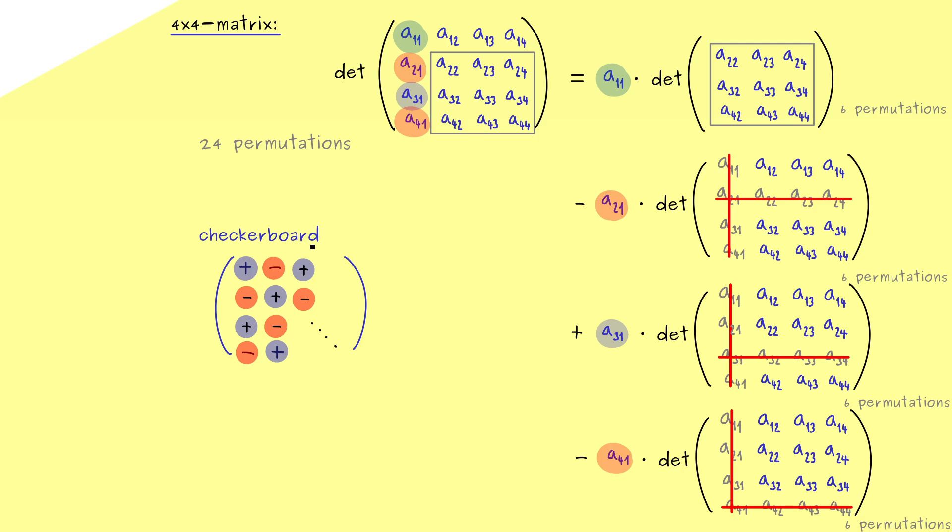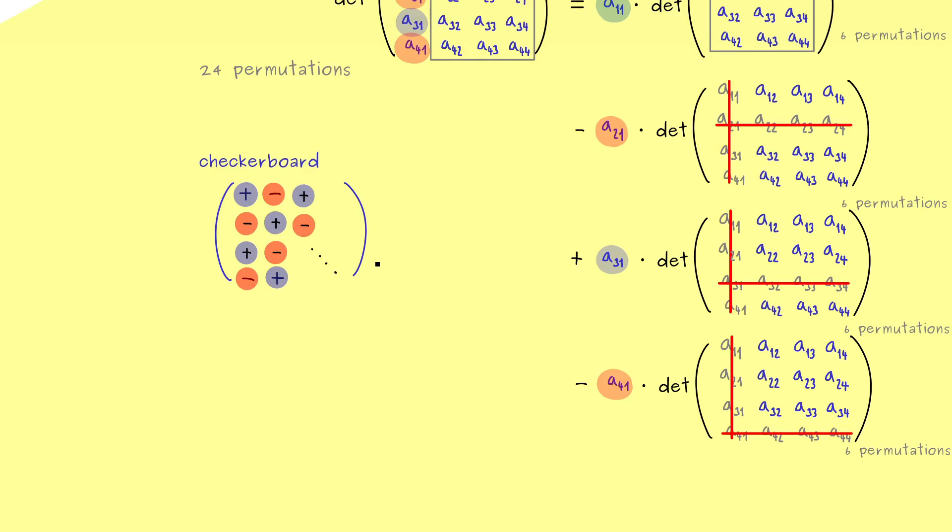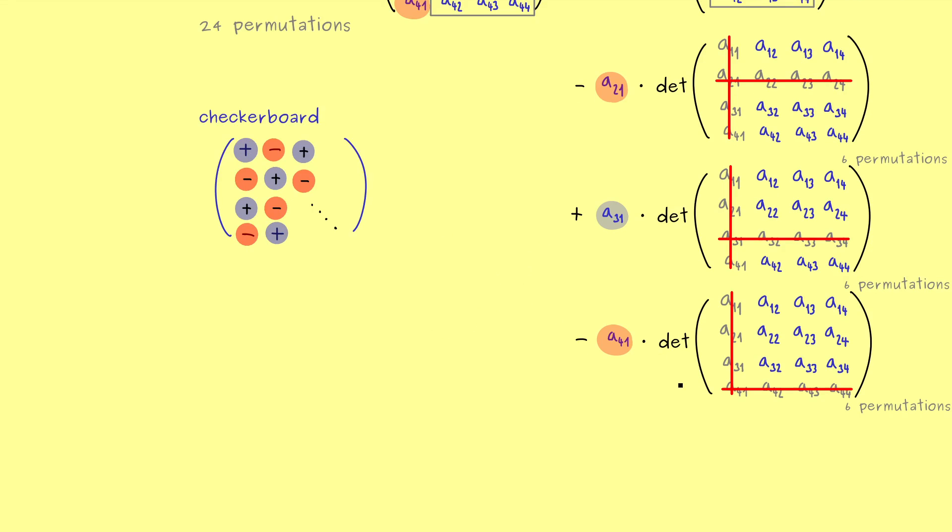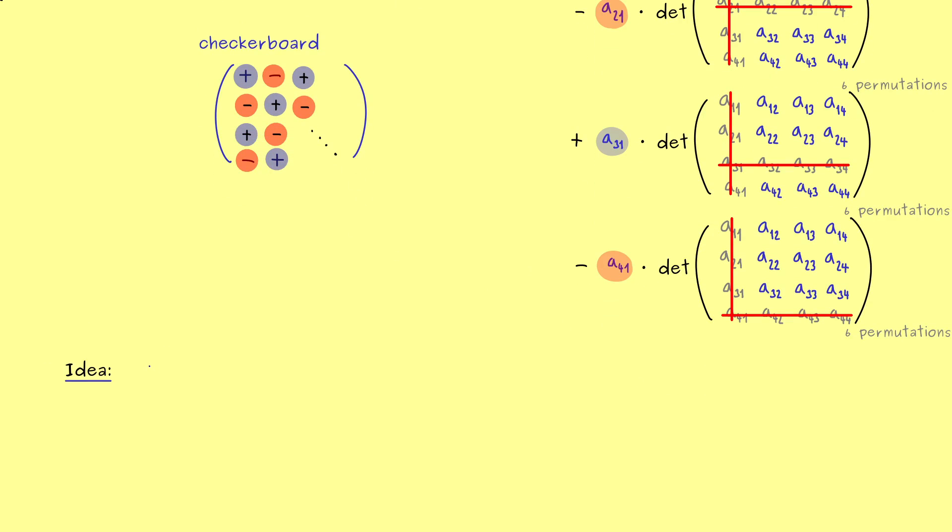Then I would say, let's write down what this whole thing here means for the general nxn case. Indeed, you should see here, the overall idea is to reduce the size of the matrix step by step. This means, if we start with an n times n matrix, we can apply this procedure here to get an n-1 times n-1 matrix. Or to say it more precisely, we get n of these smaller matrices. However, now it should be clear, that for these matrices we can apply this whole expansion formula again and again. And we do this until the matrices are small enough, such that we can easily calculate the determinant.